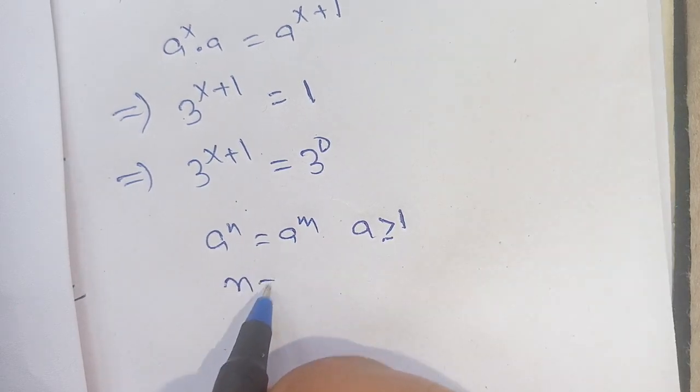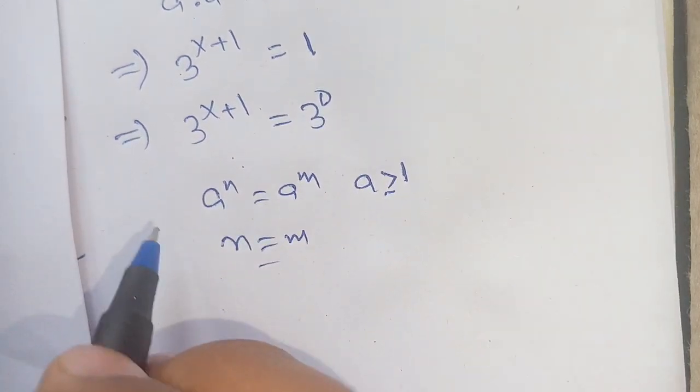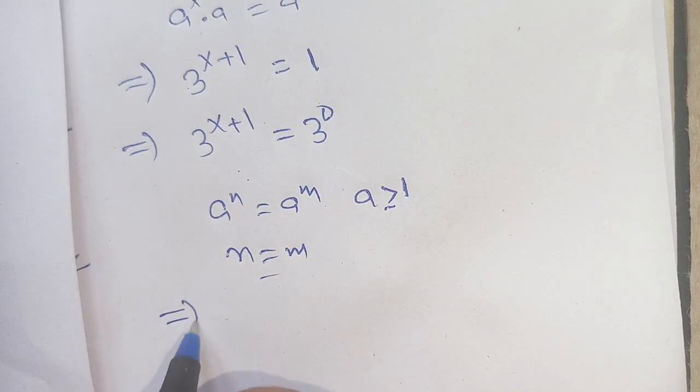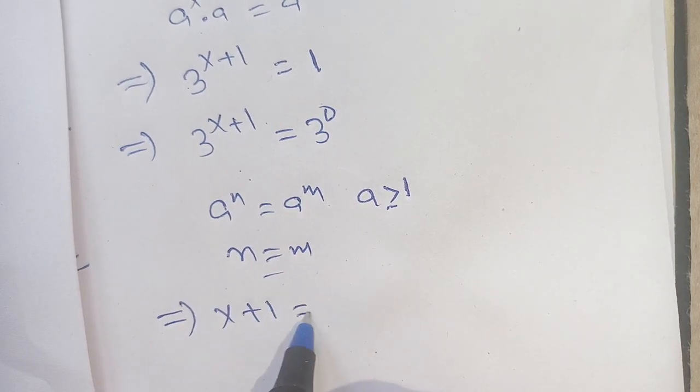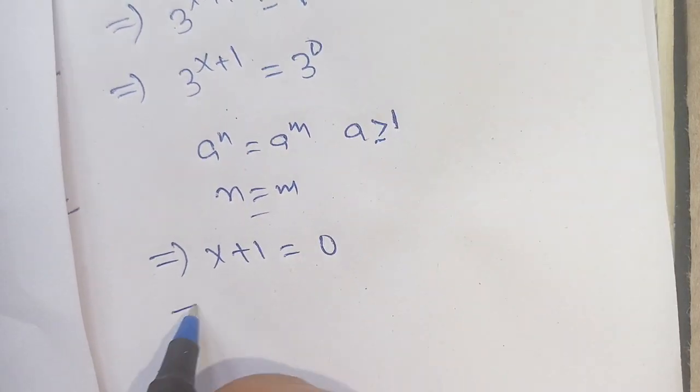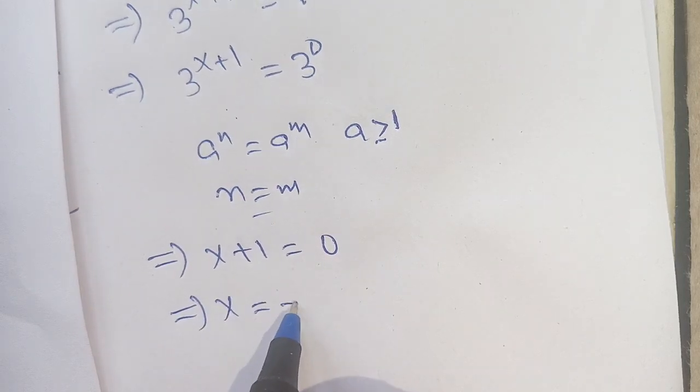Now we can compare: n = m. On comparing, we get x + 1 = 0, which implies x = -1.